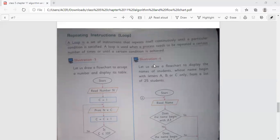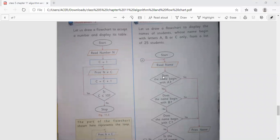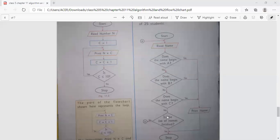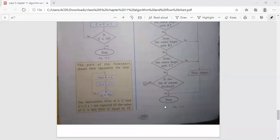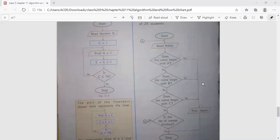Illustration 6: Let us draw a flowchart to display the names of students whose names begin with letter A, B or C only from a list of 25 students. Start, read number. Does the name begin with A? No. Does the number begin with B? No. Does the number begin with C? No. Is the list of the name finished? Yes. Stop. Then here is yes, yes, and print name.